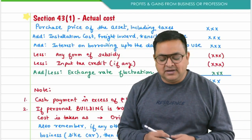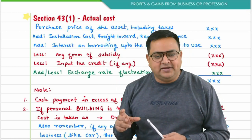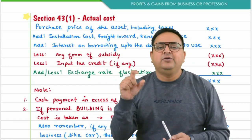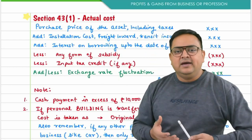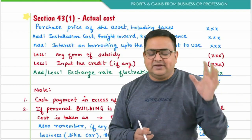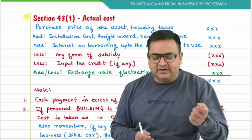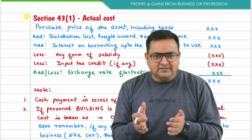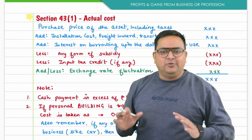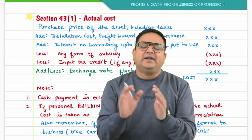Section 43(1) defines 'actual cost' because whenever we compute depreciation on any asset, we calculate it block-wise including additions during the year. If you purchased a machine, what is the actual cost to take? It is also used in other places — for example, if you purchased an asset for scientific research purposes and are allowing 100% deduction, the deduction is on the actual cost of the asset. The thumb rule is: capitalize all expenses incurred up to the date of put to use.